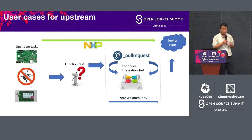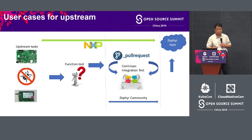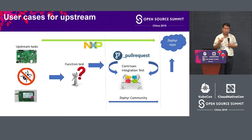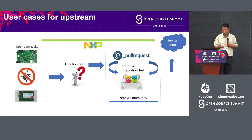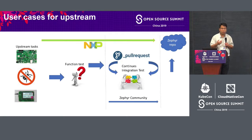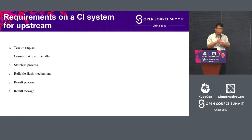When establishing a cloud architecture, we need to consider the use case first. Today's use case is how to upstream the BSP. The use case is: we have the upstream task, we do local debugging and local functional tests, then we generate a pull request. The pull request triggers integration tests, and after they complete, we finish the upstream. This is a standard use case.